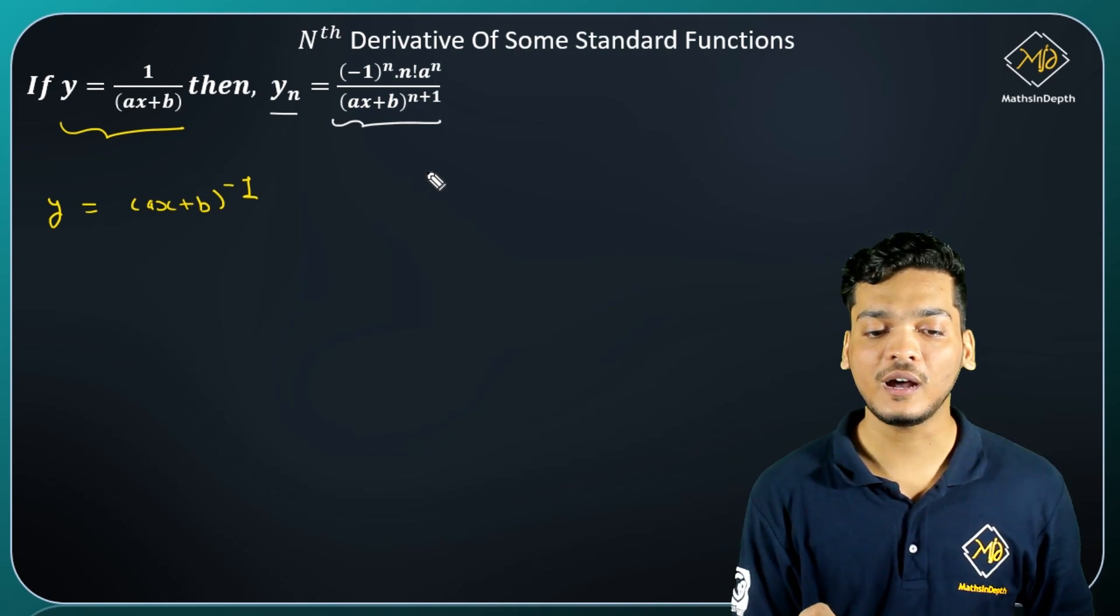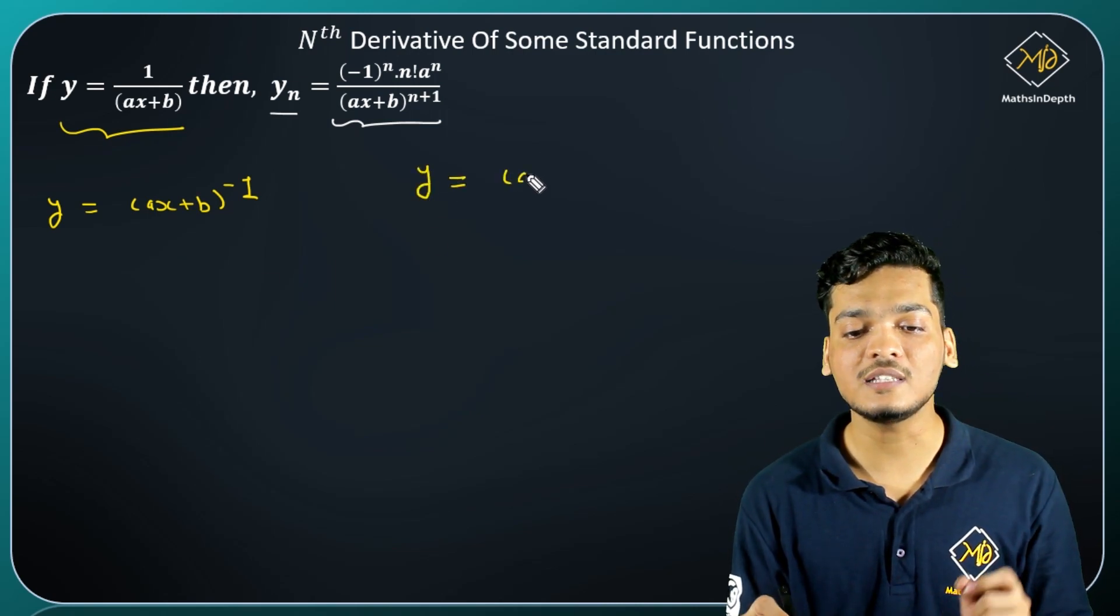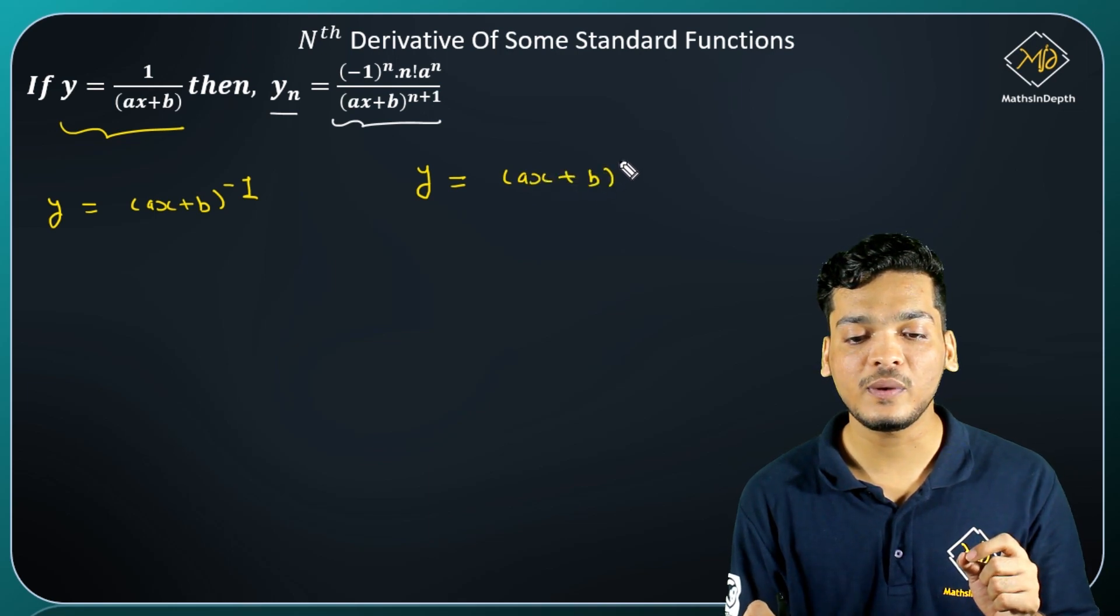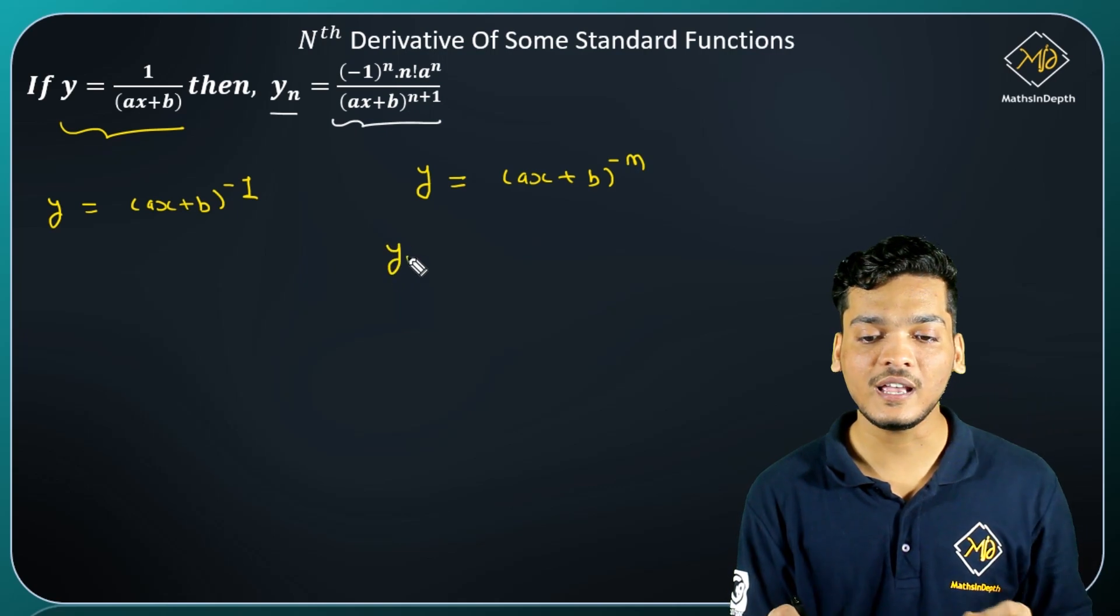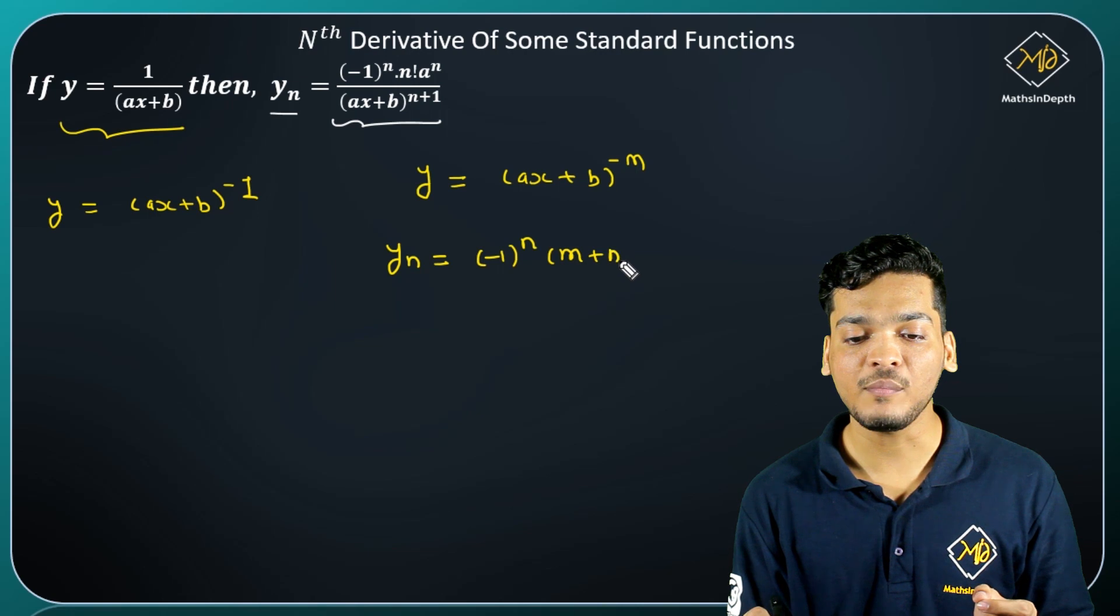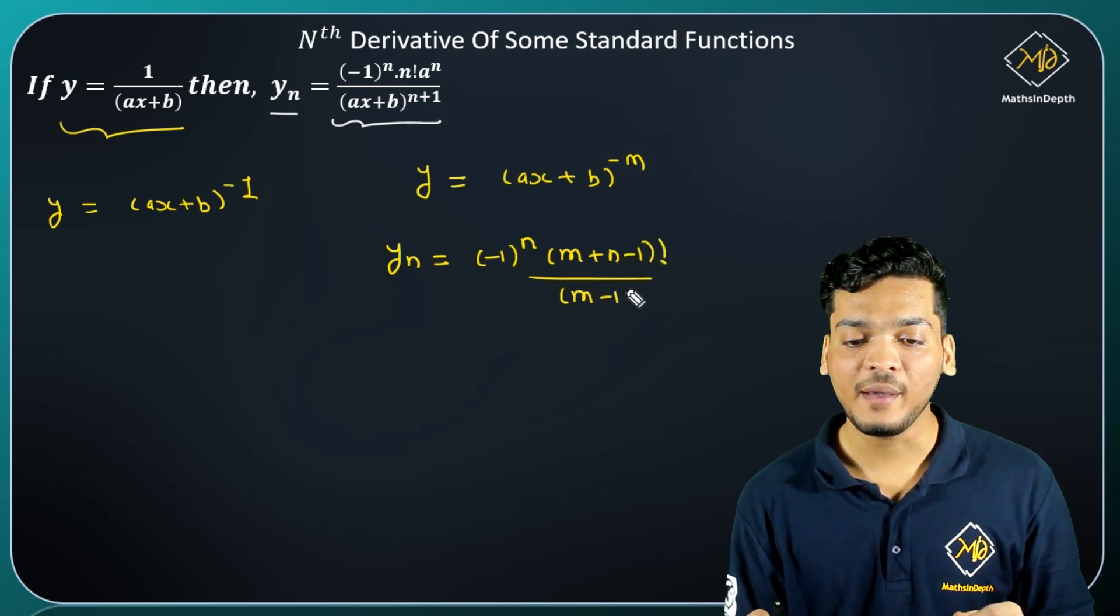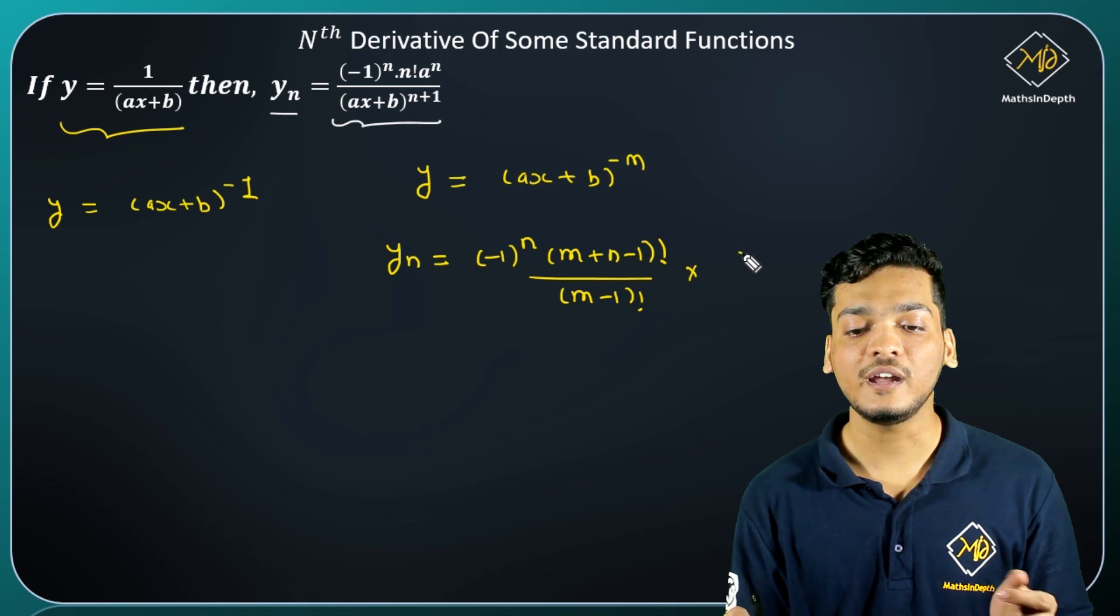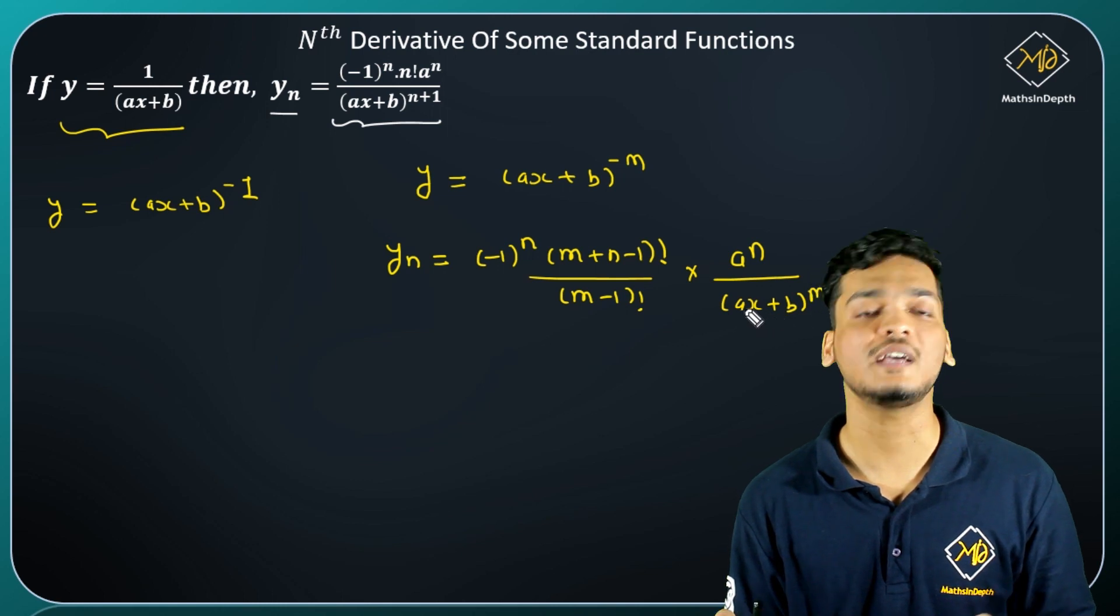If y is equal to (ax+b) raised to minus m, then its nth derivative will be equal to minus 1 raised to n, then (m+n-1) factorial divided by (m-1) factorial, into a raised to n upon (ax+b) raised to (m+n).